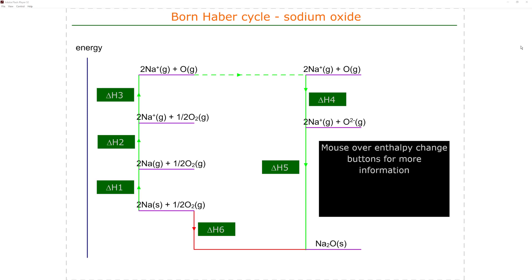The Born-Haber cycle of sodium oxide. The red line at the bottom of the cycle shows the enthalpy of formation of sodium oxide from the elements in their standard states - sodium is a solid and oxygen is a gas.